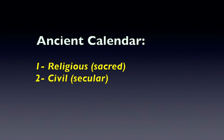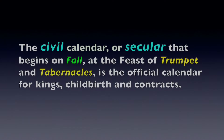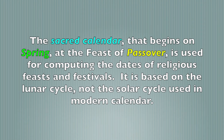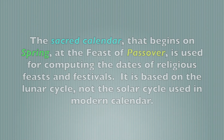The ancient Israelites had both a religious and a civil calendar. The civil or secular calendar begins in fall at the Feast of Trumpets and Tabernacles, and is the official calendar for kings, childbirth, and contracts. The sacred calendar begins in spring at the Feast of Passover and is used for computing the dates of religious feasts and festivals. It is based on the lunar cycle, not the solar cycle used in the modern calendar.